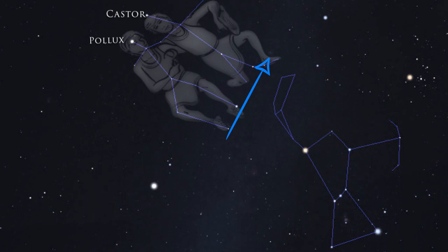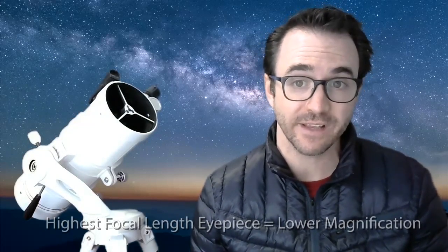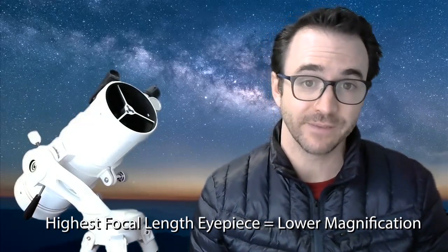Now moving over to your finder scope, if you're using a finder scope, point your telescope as close you can to this spot, and through your finder scope, you should be able to make out the cluster. Center the cluster in the finder, then move to the eyepiece for a close-up view. Remember to use your lowest power eyepiece, that's the one with the highest focal length, providing the lowest magnification.